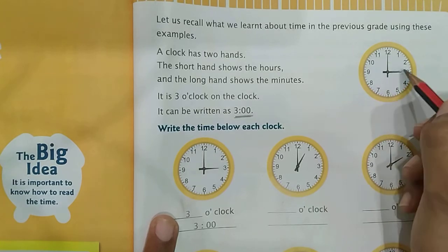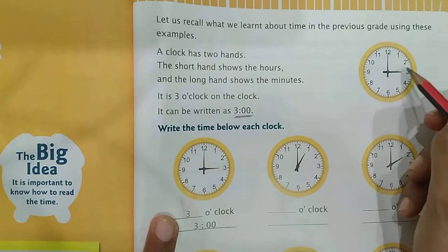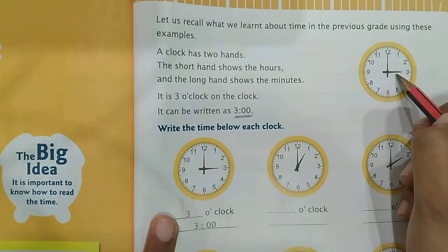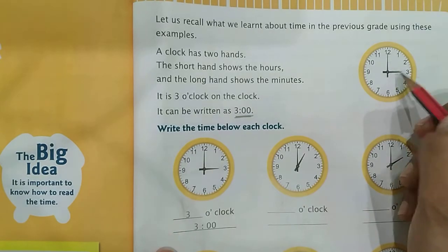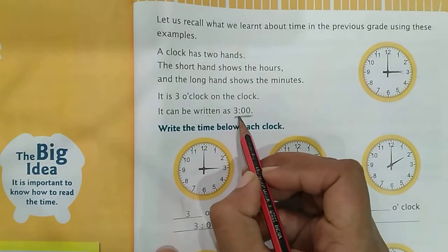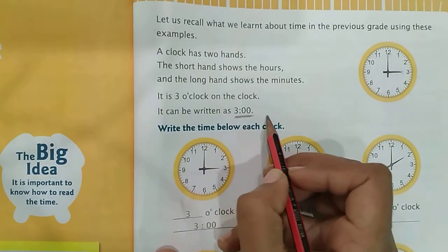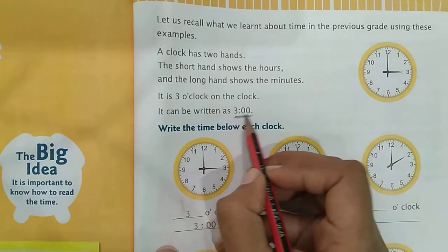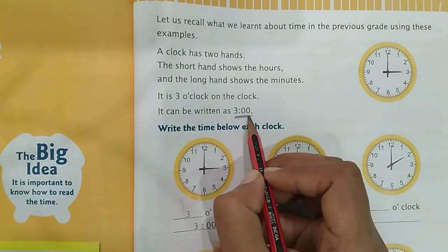So it is 3 o'clock on the clock. It is 3 o'clock on this clock. It can be written as 3:00. It can also be written as this.